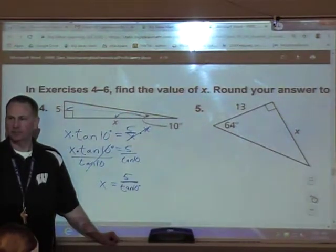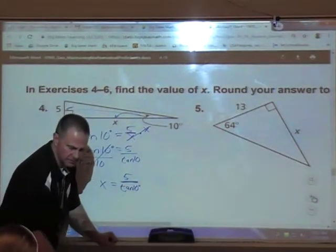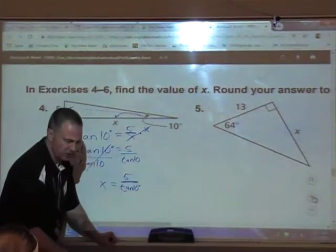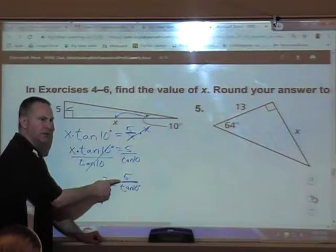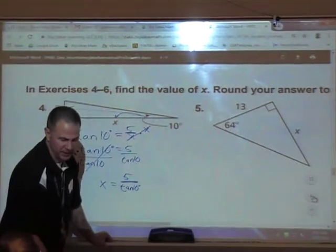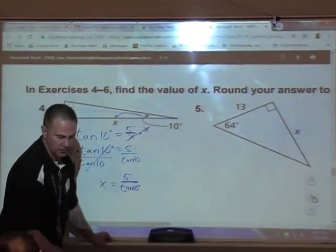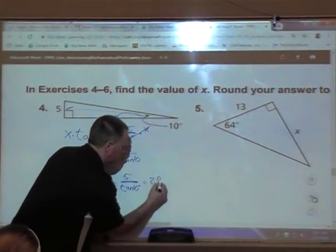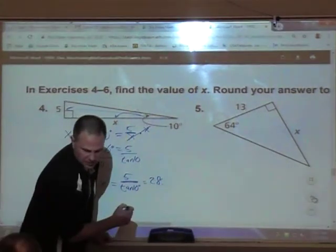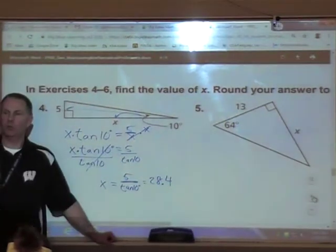Now, how do we get X by itself here? Tangent of 10 is attached by multiplication, so we're going to divide by the tangent of 10. Again, this is called manipulation. We're manipulating what the thing looks like. So X is equal to 5 over the tangent of 10 degrees. And you say, that still doesn't help me. I don't understand what we're doing. Now take your calculator. Clear it. Put 5 in. Hit division, because we're dividing. And then hit the tan key, tangent, and type in 10. Close your parentheses, and hit equals. And so round to the nearest tenth, so 28.4. Did everybody get 28.4? Yes or no? Who did not get 28.4?